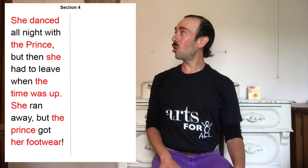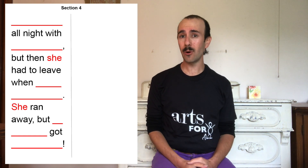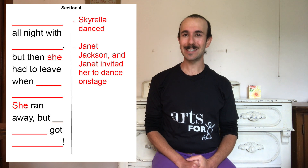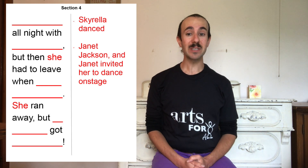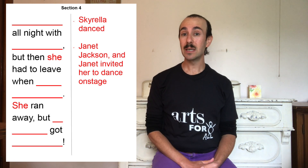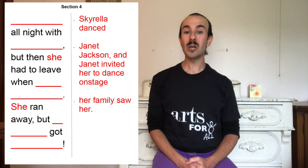She danced all night with the prince, but then she had to leave when the time was up. She ran away, but the prince got her footwear. Now that they've made it to the big event, what are they doing there? Are they dancing like our Cinderella characters before, or something else? Our second graders decided that Skyrella danced all night, and they added that Janet Jackson invited her to dance on stage. How did your main character know it was time to leave? Cendrillon left because the clock struck midnight. Yeshen and Beacon saw their families. Our global Cinderella heard the rooster crow. Our second graders decided that her family saw her dancing on stage.